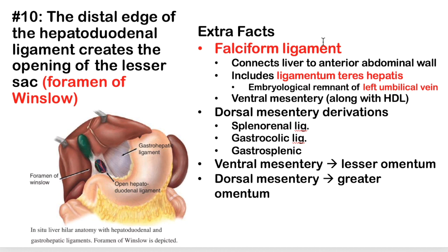The falciform ligament attaches the liver to the anterior abdominal wall. Contained within it is the ligamentum teres hepatis, which is an embryological remnant of the left umbilical vein — a very high-yield concept to have ingrained for the exam.